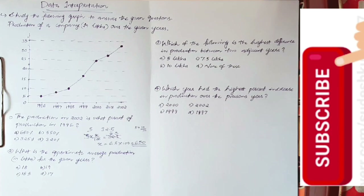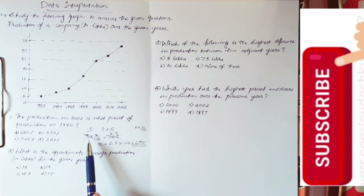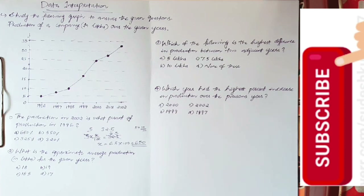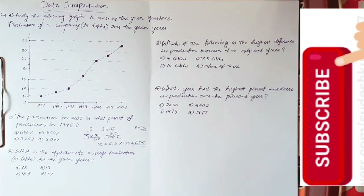If you do not calculate it directly, it is necessary to do it mentally. Because 5 into 100% is 5, 5 into 50% is 2.5, 5 into 200% is 10, 5 into 300% is 15, 5 into 400% is 20, 5 into 500% is 25, 5 into 600% is 30.